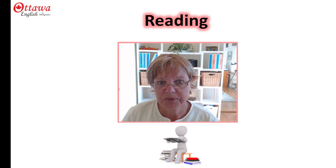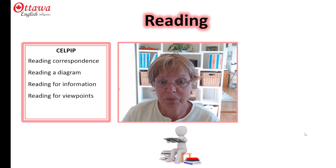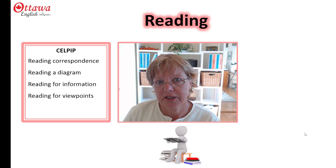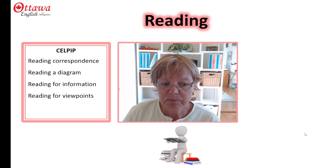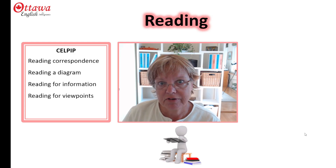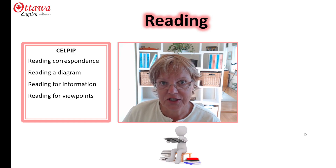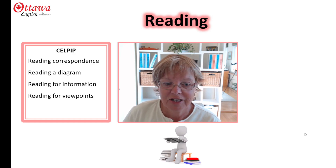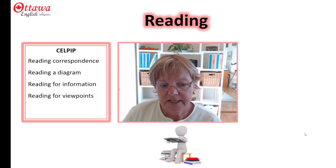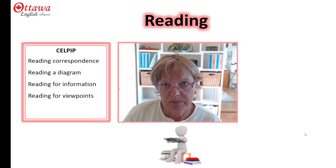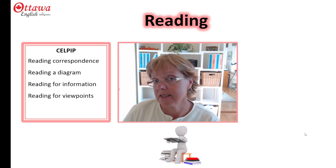Both CELPIP and PTE Core are divided into parts. CELPIP has four parts. The first part is based on an email and the reply to it. The second part is based on an infographic where you talk about a picture. The third part is a matching exercise where you're matching a statement with a paragraph, and then the fourth part is based on identifying the viewpoints on a particular topic of up to six people.